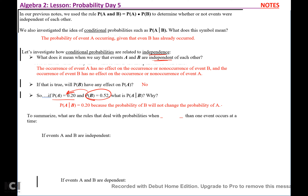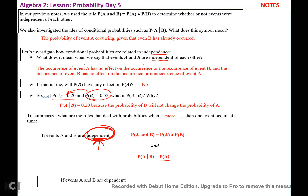To summarize, what are the rules to deal with probabilities when more than one event occurs at a time? If events A and B are independent — meaning one does not have any effect on the other — then P(A and B) = P(A) × P(B). And if your events are independent, P(A|B) is just going to be the same as P(A).